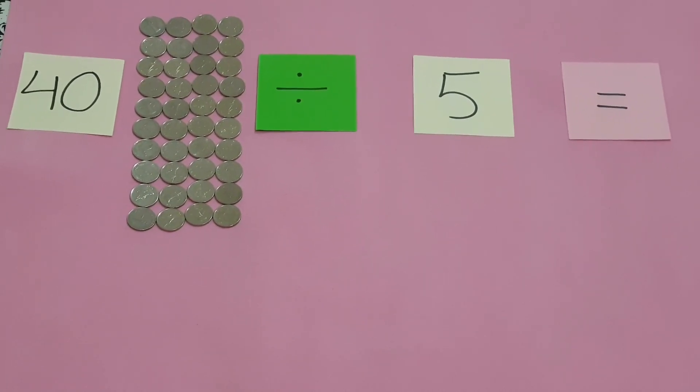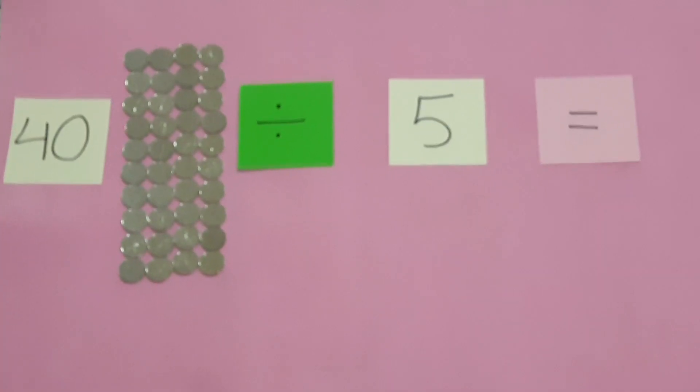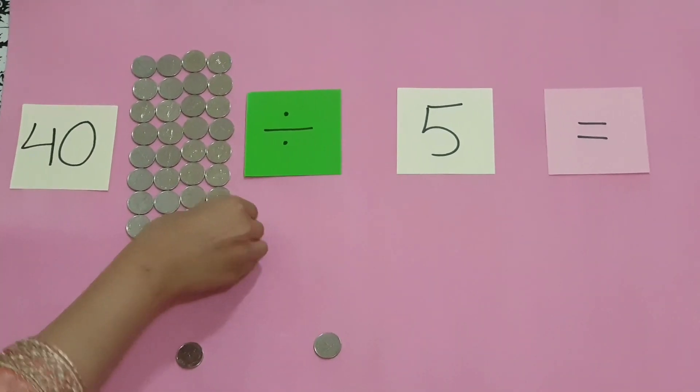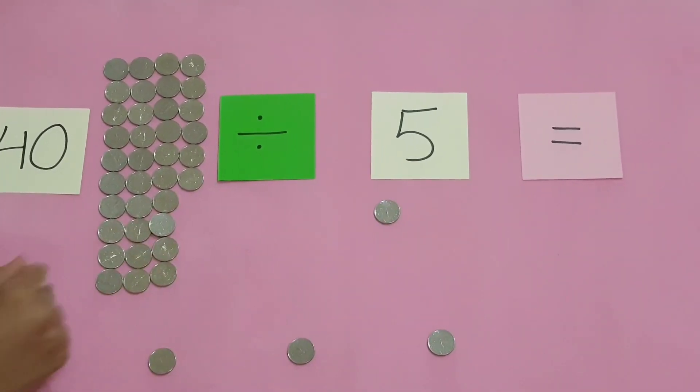Now as you can see I have 40 coins and I want to divide them in five equal groups. Let's make our groups. Put this one coin in one group, the second one in the second group, third coin in the third group, fourth coin here in the other group.